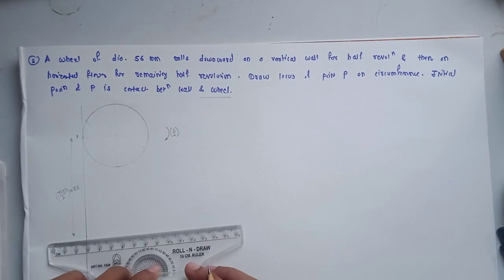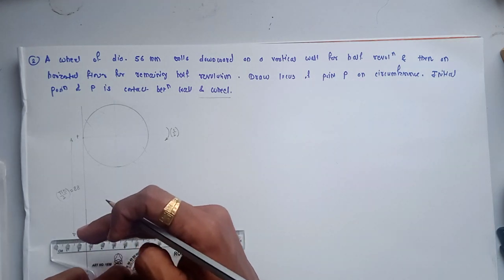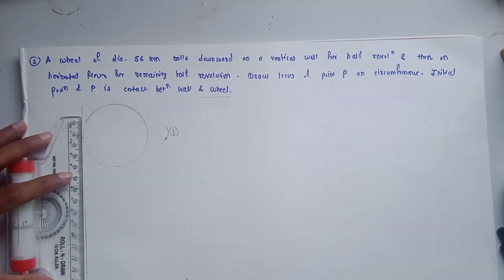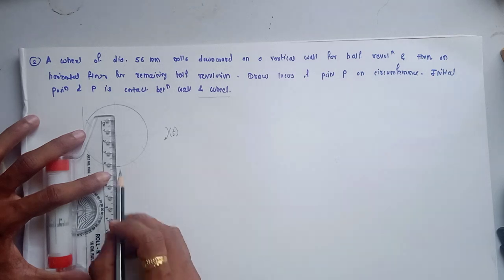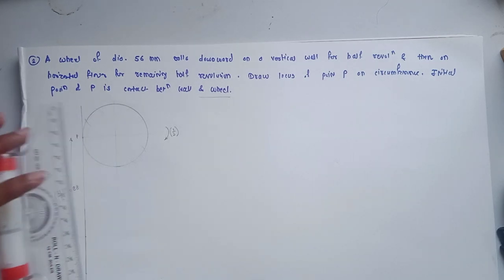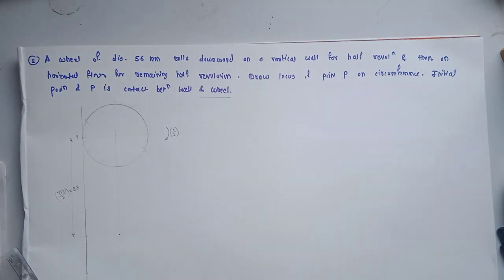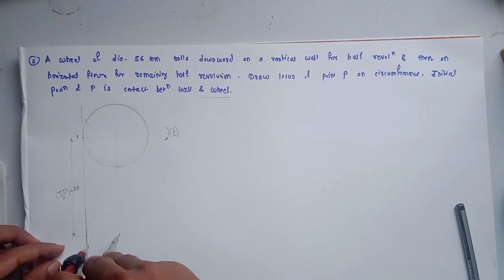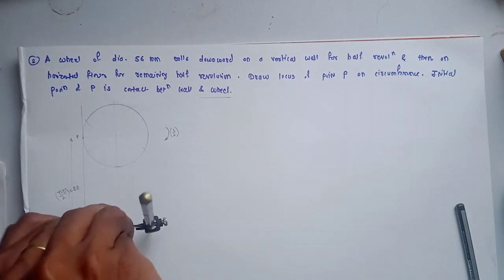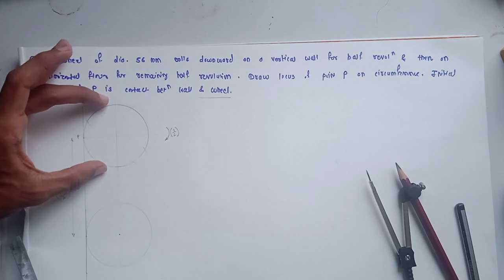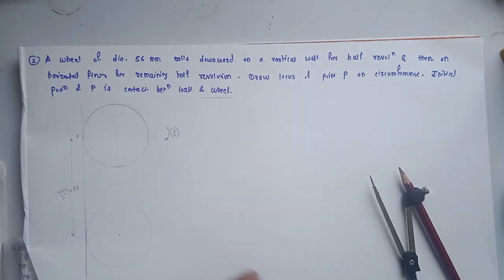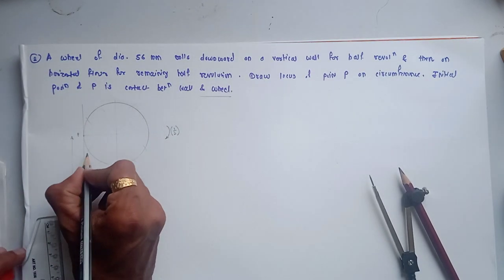From the starting center point, draw a horizontal line to locate the center position after half revolution. From this new center point, draw another horizontal line to confirm the center after half revolution. With this as center and the same radius, draw the circle — this is the position of the circle after half revolution. To trace the curve, divide the circle into 12 equal parts and name the points.